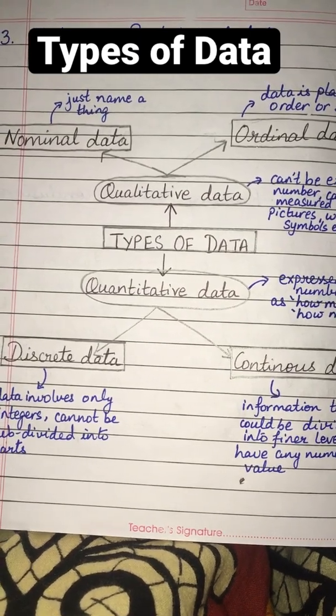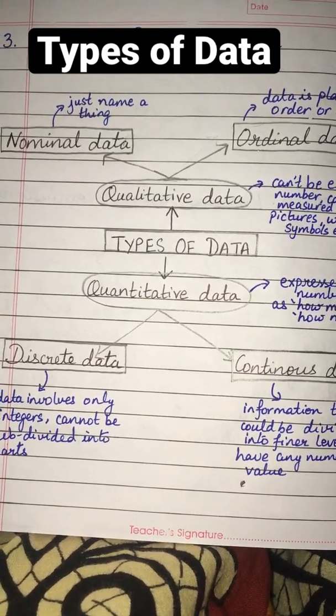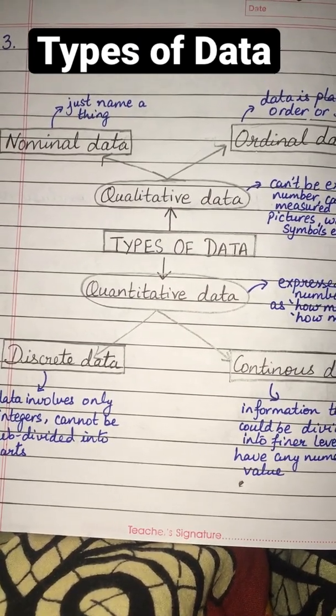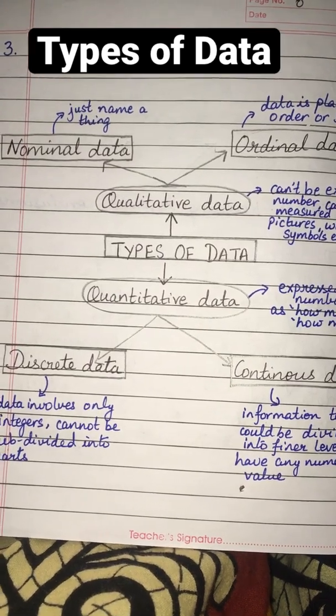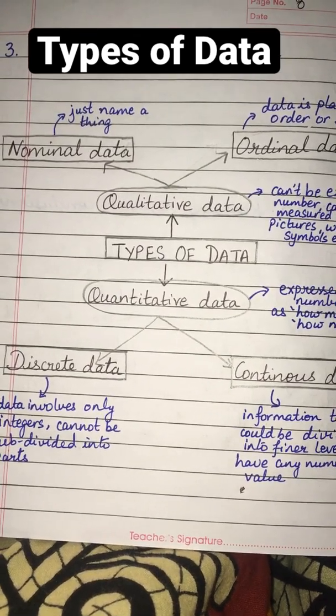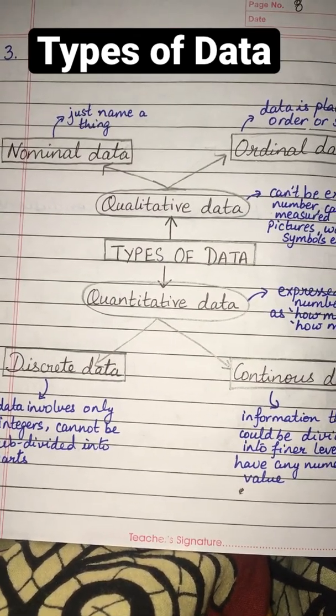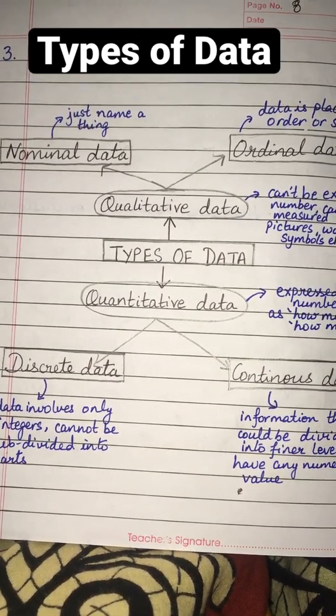Quantitative data can be expressed in numbers, such as how much, how many. Quantitative data is of two types: discrete and continuous.